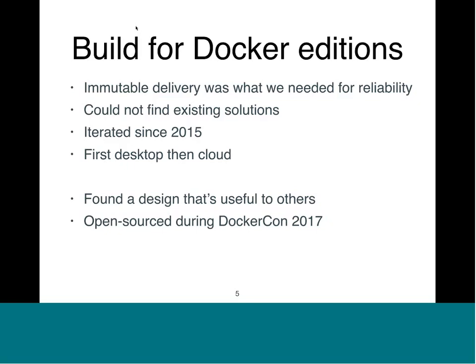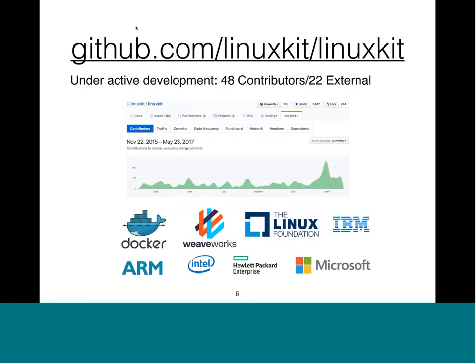We've had a lot of interest since the open source release. The project is hosted on GitHub and is in pretty active development — currently going at about 50 commits a week. We have a total of about 48 contributors, 22 of them external, so that's pretty healthy. When we started with Linux Kit, we worked with a number of partners who had early access, and we are working closely with them and the community to make this project successful.